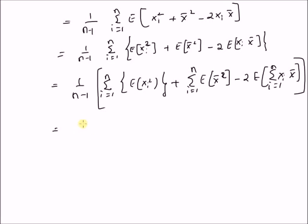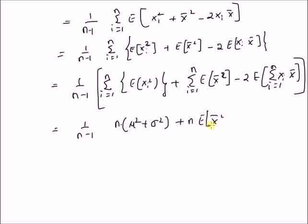This is equal to 1 by n minus 1. Since expectation of x_i squared is equal to mu squared plus sigma squared — that is the second moment of x_i — we have n times mu squared plus sigma squared. Then we have n times expectation of x̄ squared, and then minus 2n times expectation of x̄ squared.